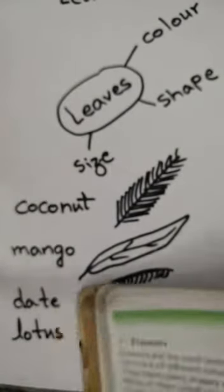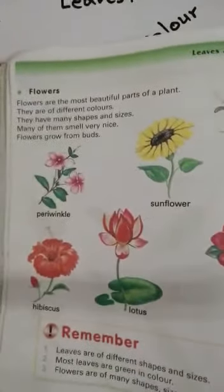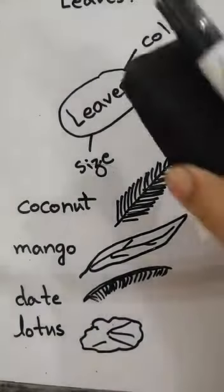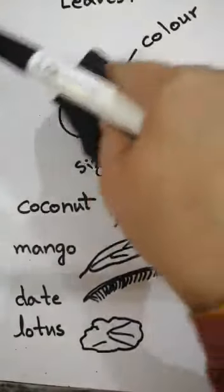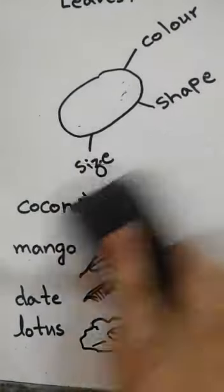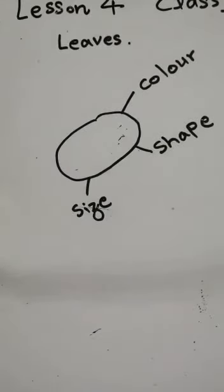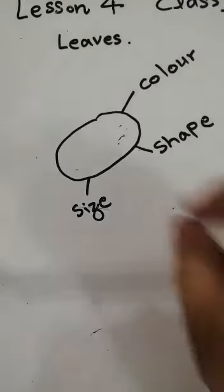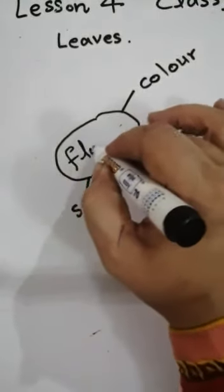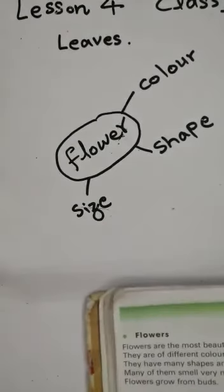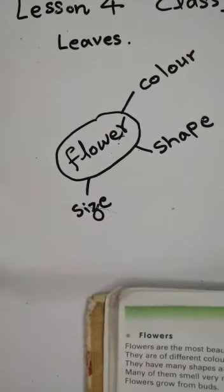یہی چیز ہمارے پاس flowers میں بھی ہے۔ جب آپ کسی flower کو دیکھتے ہیں یا کسی flower کے بارے میں study کرتے ہیں، تو وہاں پر بھی آپ اس کے color کو دیکھتے ہیں اور اس کی shape کو دیکھتے ہیں۔ Look at your book here.